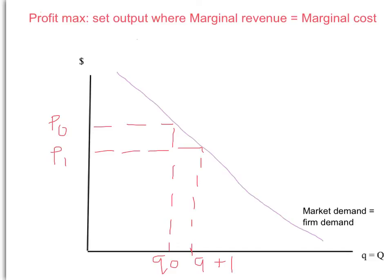Two things to note here. First, we're using our assumption that the monopoly has to sell all of its output at one price. So when the monopoly increased its output by one unit, it had to lower the price not just on the extra unit, but on all of the units that it sells. The monopoly can't set a price of P0 for its first Q0 units and then offer a discount just on that extra unit. The monopolist's thought experiment is: I'm only able to set one price. Think about this as being before the monopoly goes to the market and sets its price — how does it work out that optimal price? It's setting a single price for all units it sells.